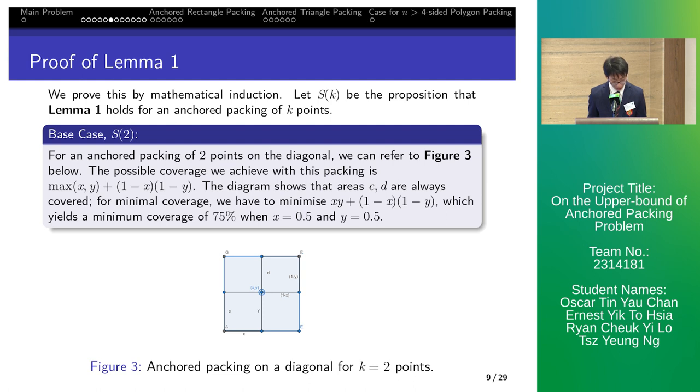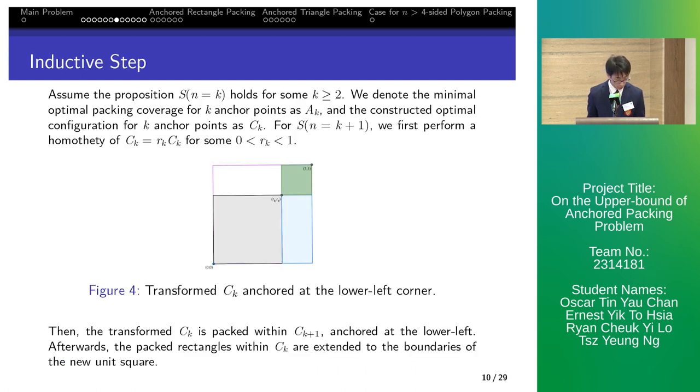Then we assume that the proposition SK holds for sum k greater or equal to 2. We denote the minimum optimal packing coverage for k anchor points as 8k, and the constructed optimal configuration for k anchor points as CK. For n equals k plus 1, we first perform a homomorphity of CK equals RK CK. Point CK is packed inside CK plus 1, anchored at the lower left. The tile of all possible maximally drawn rectangles from CK extend to boundaries of the unit square. The vertical and horizontal extensions of CK sum up to area 1 minus RK. From that, the recurrence relation for k plus 1 points is area with k points times RK squared plus 1 minus RK.